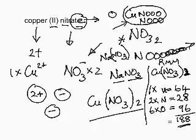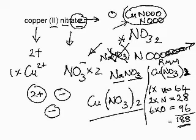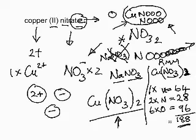Pause for a moment to establish what we've learnt. We've learnt how to use brackets when multiplying a compound ion by 2 or 3, and how to reason what atoms are present in a complex formula of this type.